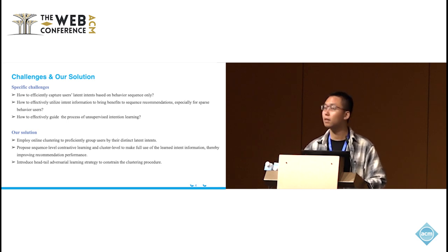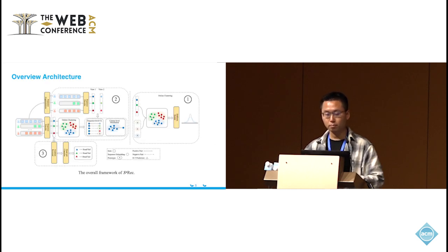For these questions, we introduce our model: online self-supervised self-distillation for sequential recommendation. It consists of three interrelated modules. This figure shows the overall framework of our method. It firstly executes online clustering to group users by their distinct latent intents. Subsequently, it conducts cluster-aware self-distillation to transfer knowledge from corresponding intents to users with limited behaviors. And at last, an adversarial learning strategy is introduced to ensure the clustering is not affected by the head-tail factor. Next, we give a detailed introduction to these modules.